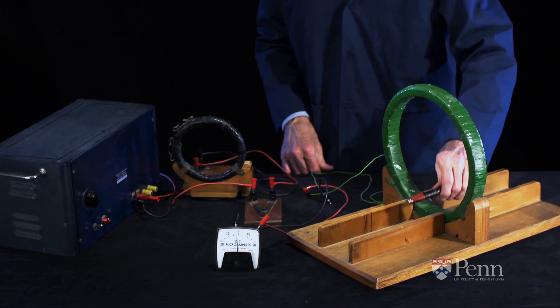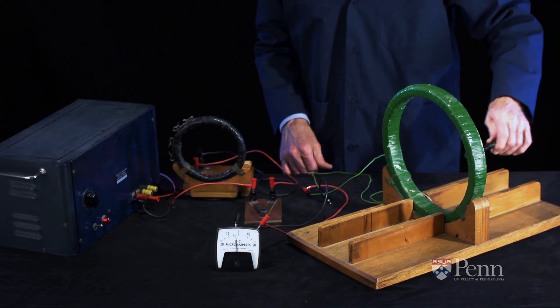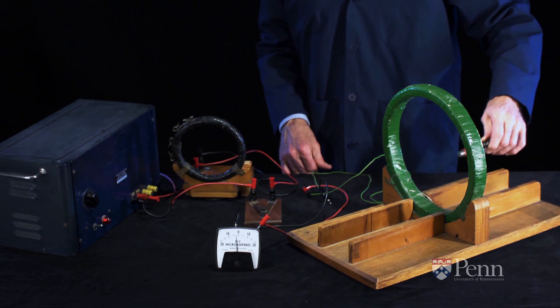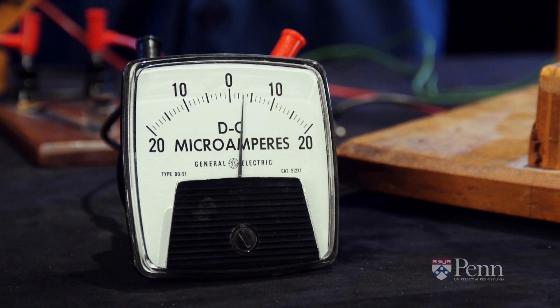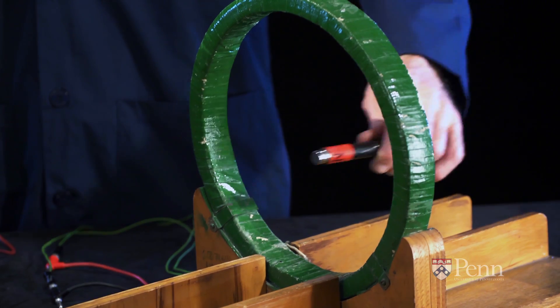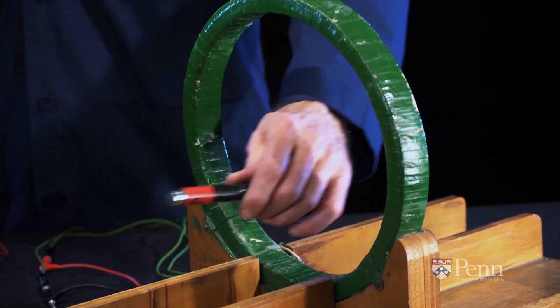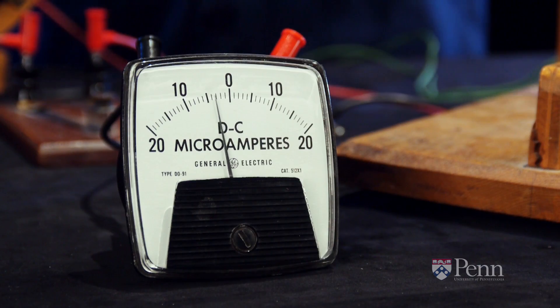If the magnet is moved, the magnetic field within the coil of wire changes. And it is this changing magnetism that induces electricity. This is what Michael Faraday discovered. And notice that by moving the magnet in different directions, we produce electricity in either the forward or the backward direction.